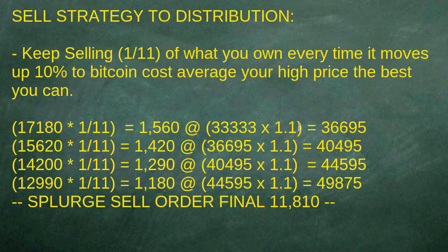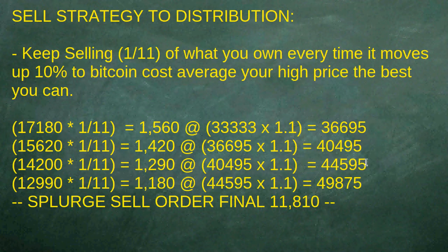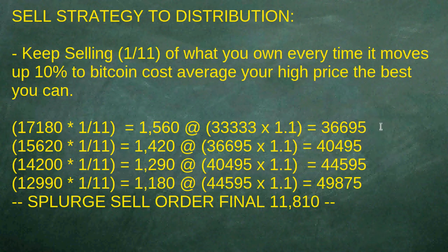I've taken 33,000 as my last sell and I'm multiplying by 10%, so that's about 36,666 — let's round up to 36,695. I multiply by 1.11 and continue doing so until it reaches 50,000. After that you do a splurge sell of the final 11,800. By splurge sell I mean you've got 4 in already to Bitcoin cost average up — maybe put one in at about 65,000, maybe 4,000 there; then maybe at about 150,000 another 4,000; and then 3x or 4x from that you put the rest in.